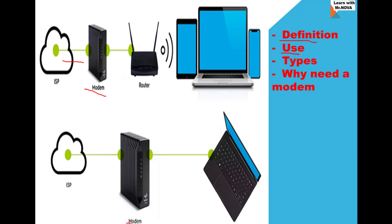Now, what is the use of a modem? A modem simply modulates and demodulates electrical signals. The word 'modem' is an acronym for modulation and demodulation. Looking at the second topology diagram, a modem converts the analog signals being sent from the ISP cable and converts them into digital signals, then sends them to your computer. This process is called modulation — taking the analog signals from the ISP cable line and converting them into digital signals sent to your computer.